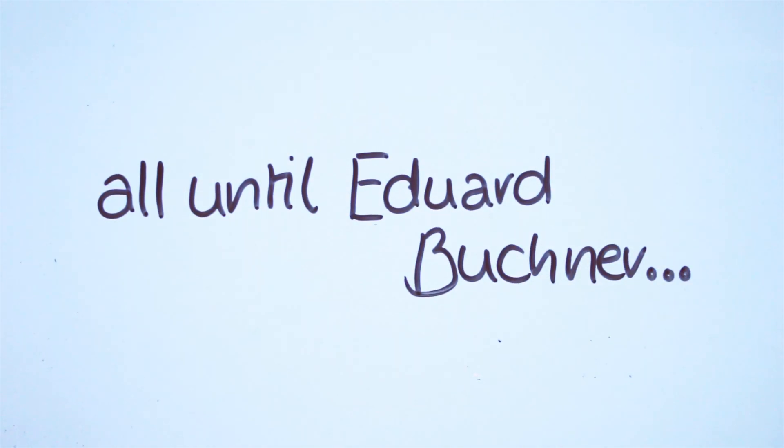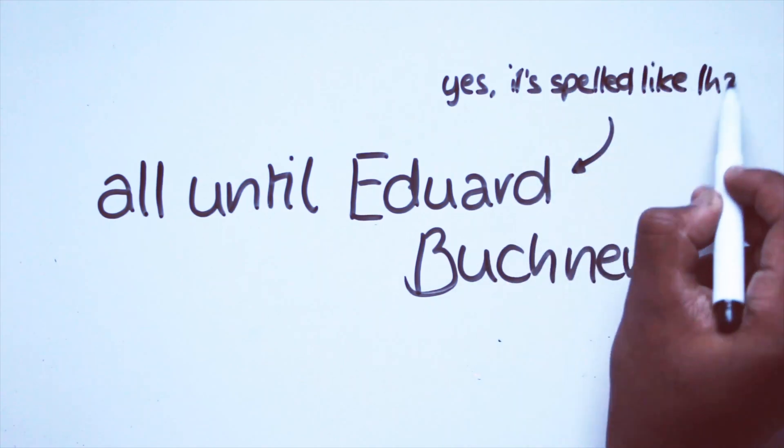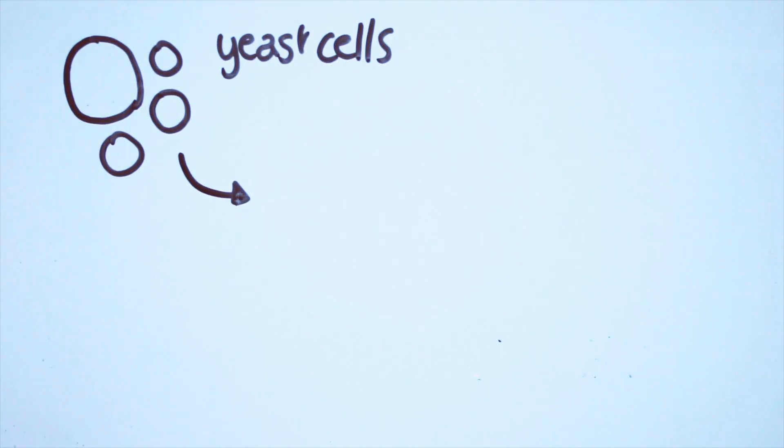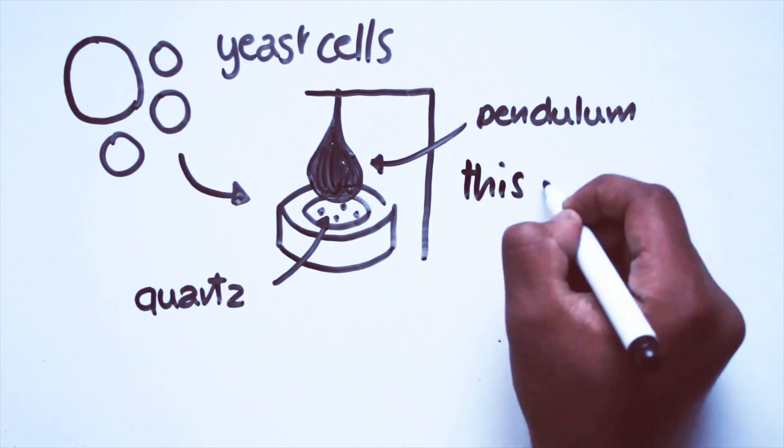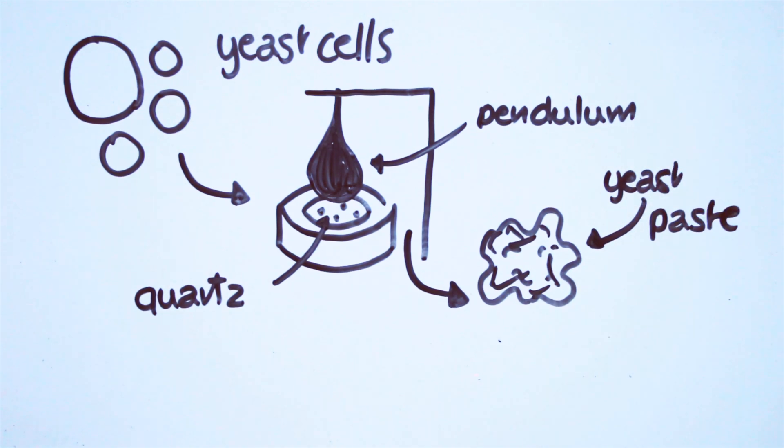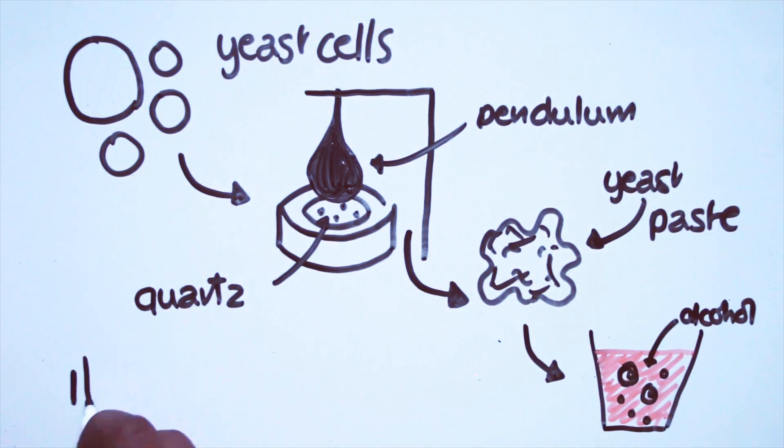This was the view held until Edward Buchner in the late 19th century tried something new. Instead of using harsh techniques as those tried before, he developed a pendulum that could gently grind the yeast cells until you were left with just a mushy yeast paste. This could perform fermentation.